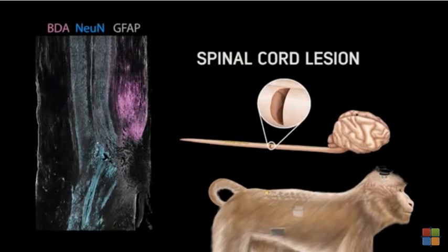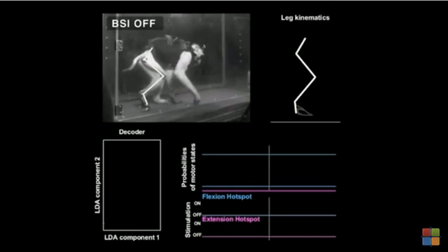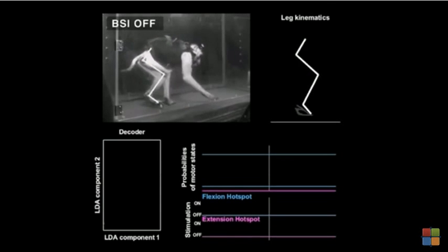Monkeys received a spinal cord injury interrupting the corticospinal tract at the thoracic level. This lesion led to a paralysis of the leg ipsilateral to the injury.